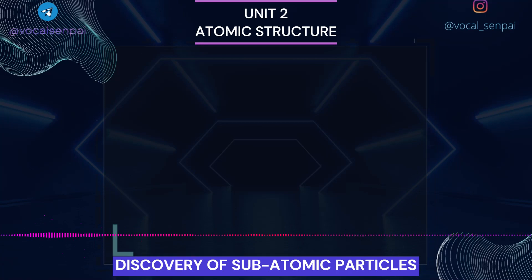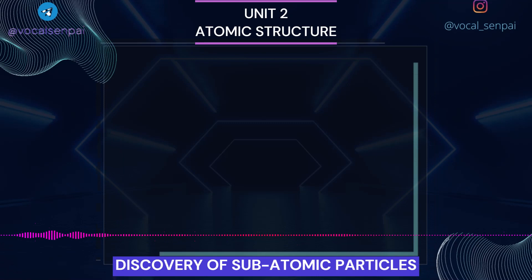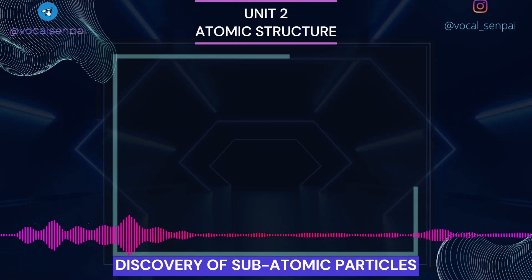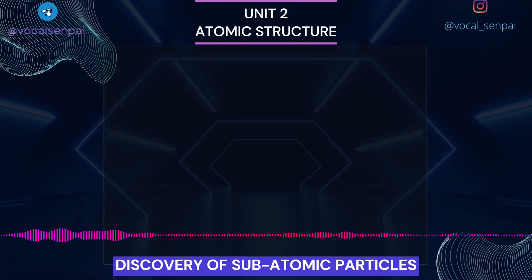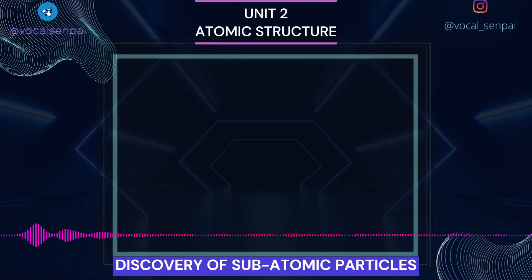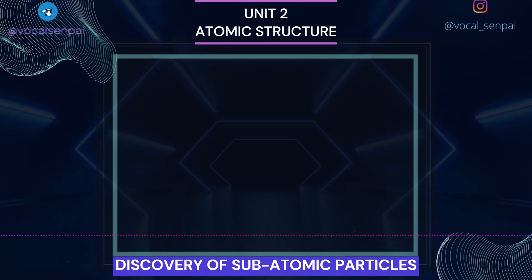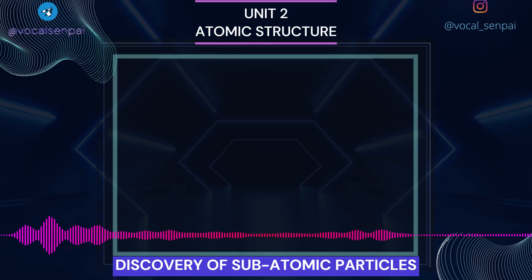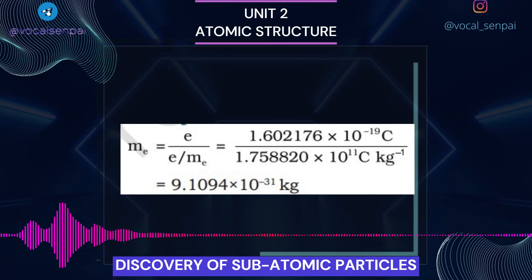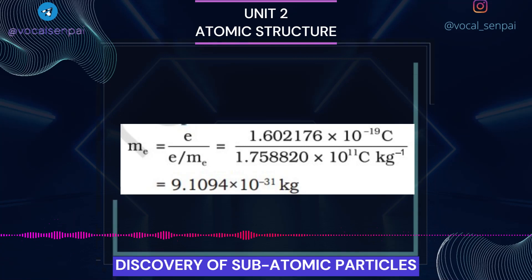Charge on the Electron: R. A. Millikan (1868–1953) devised a method known as the Oil Drop Experiment (1906) to determine the charge on the electrons. He found the charge on the electron to be 1.6 × 10⁻¹⁹ C. The present accepted value of electrical charge is 1.602176 × 10⁻¹⁹ C. The mass of the electron (m) was determined by combining these results with Thomson's value of the e/m ratio.